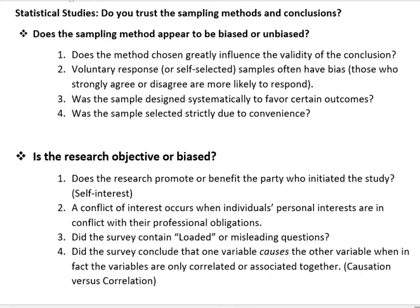Was the sample selected strictly for convenience? Maybe you want to talk to people about how much money they spend on movies every year, and you just want to find people that definitely go to the movies, so you stand outside the movie theater and ask them. That's convenient because those people will all have some kind of answer. But what about the people who aren't at the theater? You should be asking people randomly in the population, not just the people you know have gone.